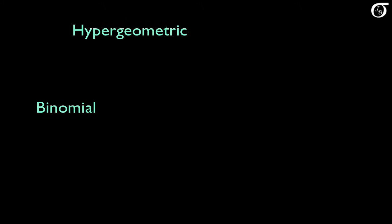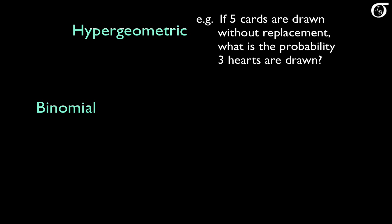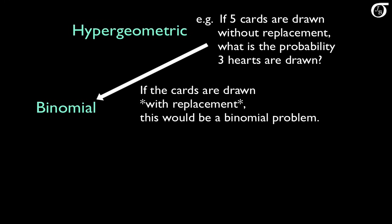Now we'll talk about two distributions that are related to the binomial, but aren't based on independent Bernoulli trials. The hypergeometric distribution is similar to the binomial in that we're interested in the number of successes in n trials, but it's different because the trials are not independent. The hypergeometric distribution is the distribution of the number of successes when drawing without replacement from a source that contains a certain number of successes and a certain number of failures. For example, if five cards are drawn without replacement from a well-shuffled deck, what is the probability exactly three hearts are drawn? It's different from the binomial because the probability of getting a heart changes from card to card depending on what happened before. However, if the cards are drawn with replacement, the trials would be independent and we would use the binomial distribution instead.